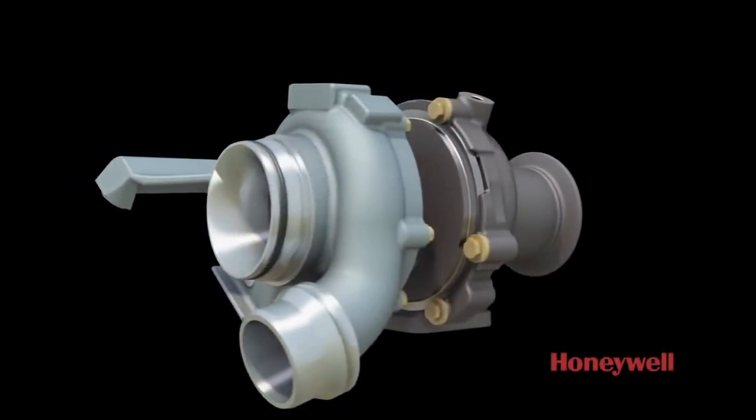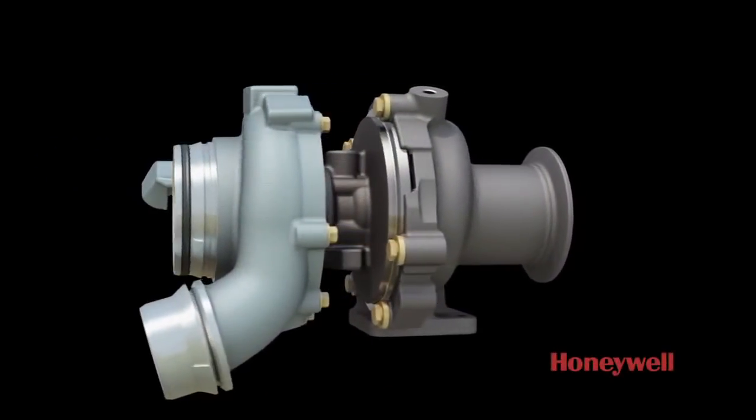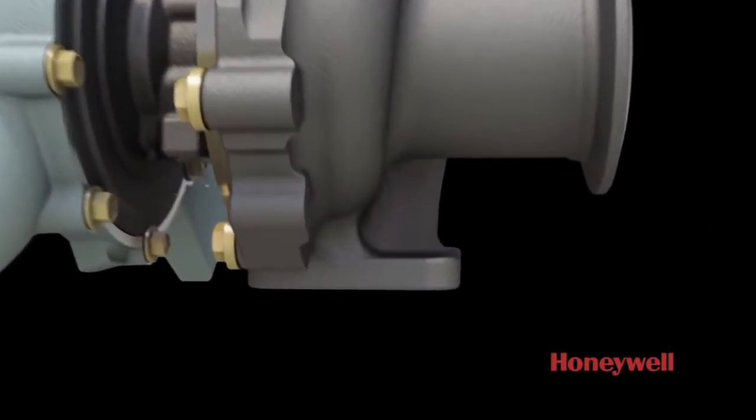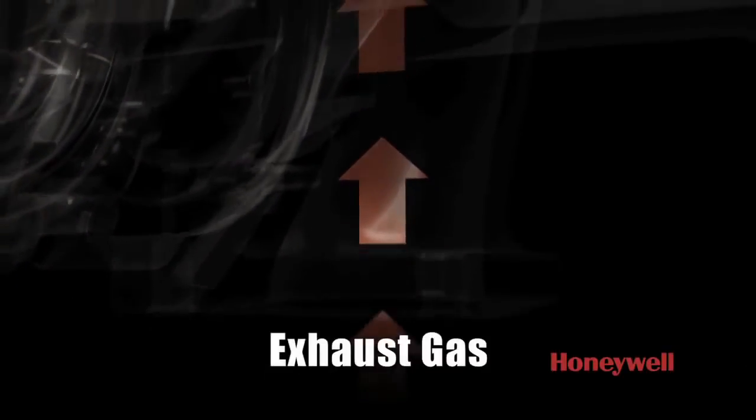To get more air into the engine, a turbocharging system starts with an engine's exhaust gas, power that is essentially wasted in non-turbo engines. This exhaust gas is channeled to the turbo, where it spins a turbine wheel.